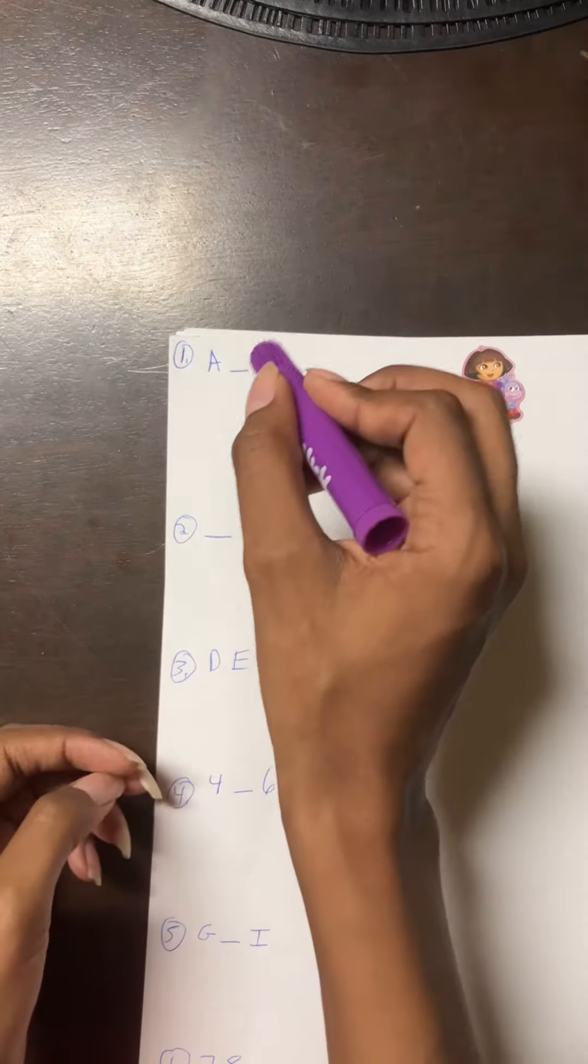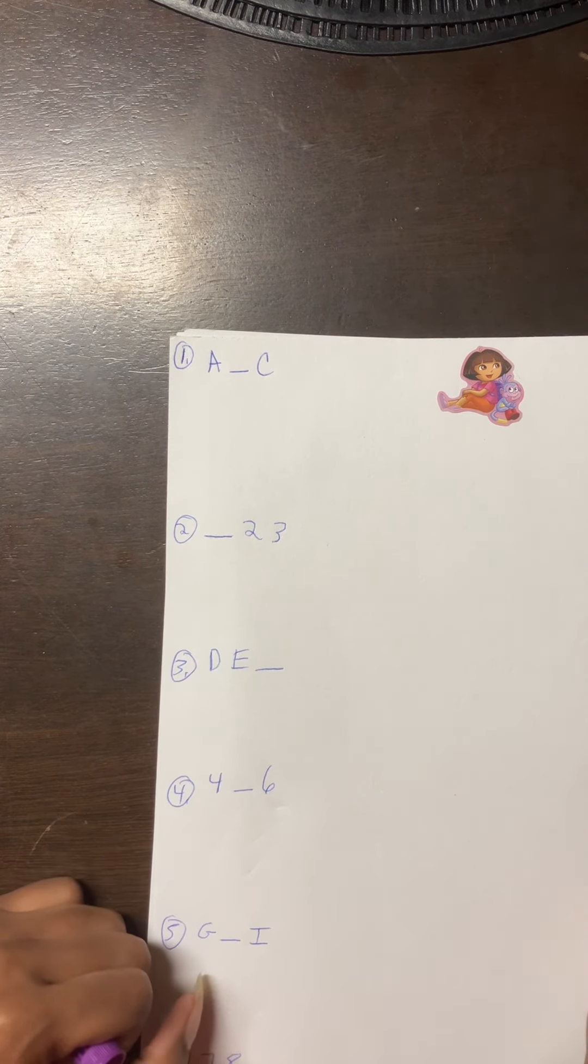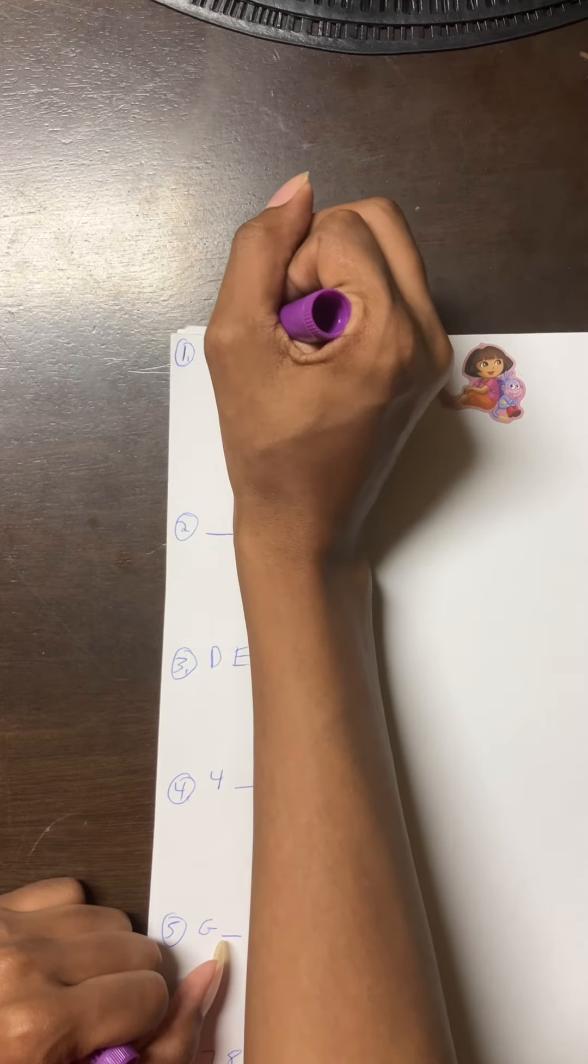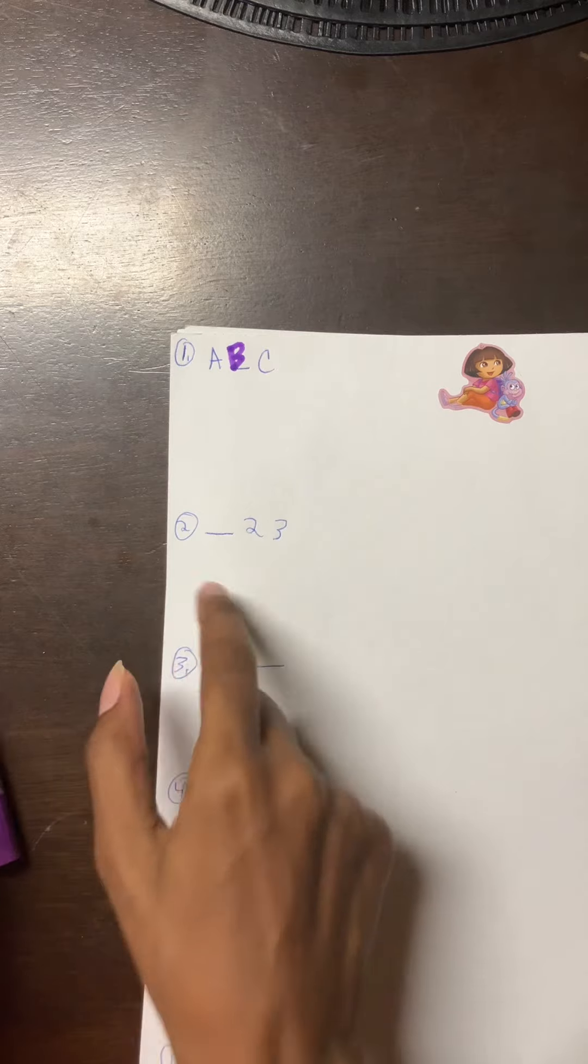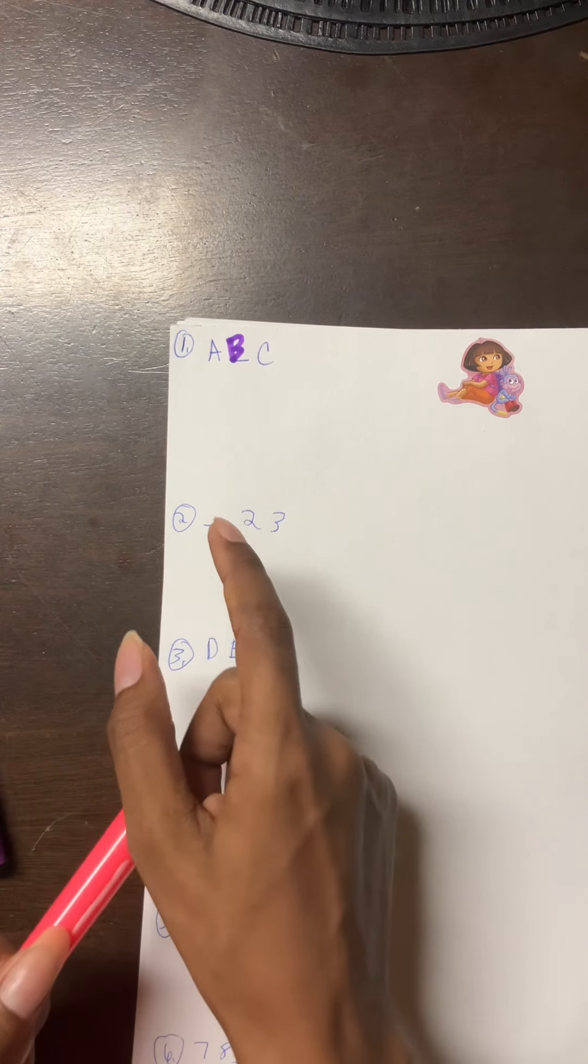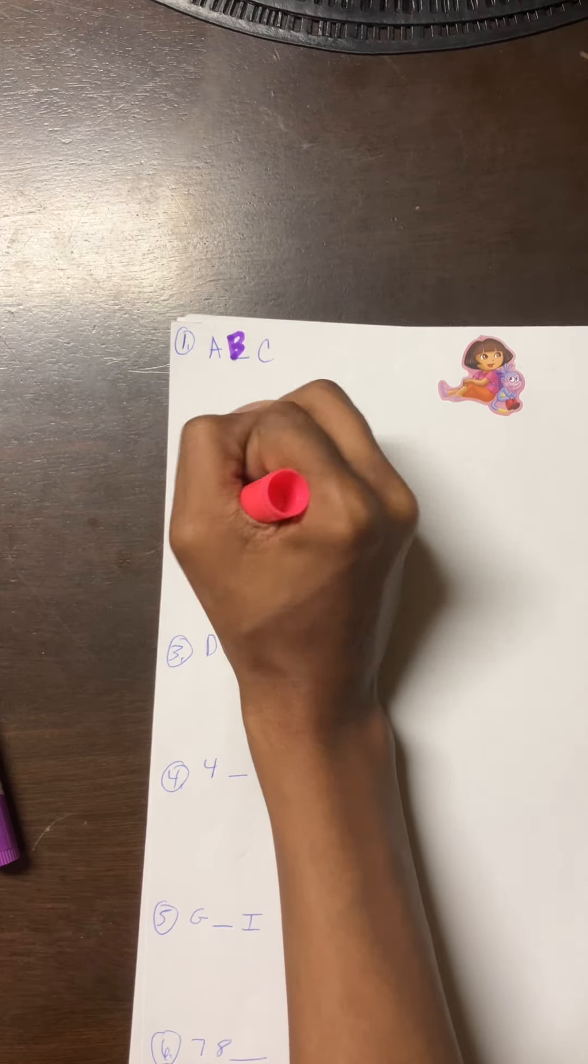The first one is A blank C. So what comes after A? B. Next, number two: blank 23. So what comes before two? One. So I'll write one.